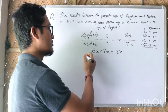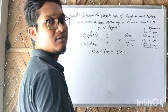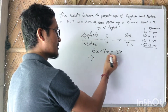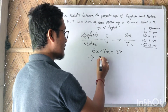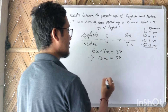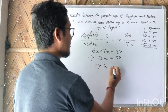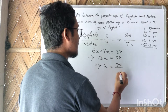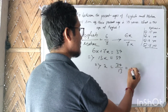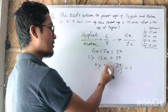This is the solution we can do. 6x plus 7x equals 39, so 13x equals 39. The value of x is 39 divided by 13, so x equals 3.